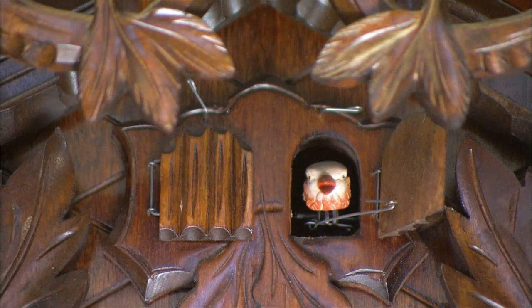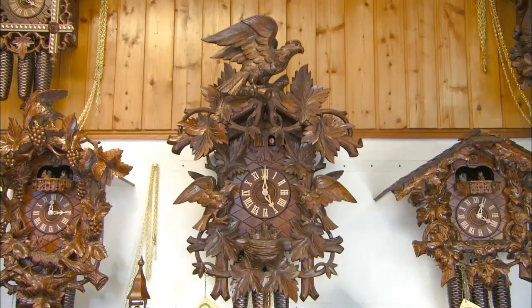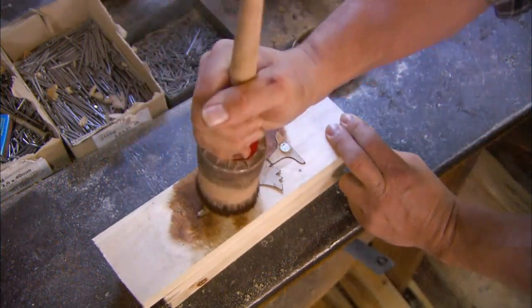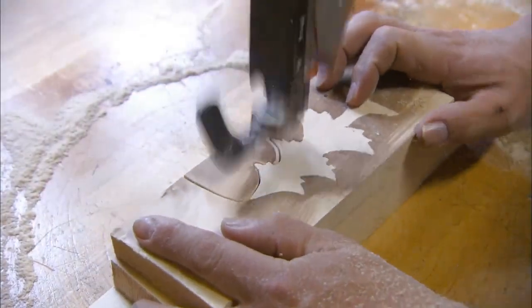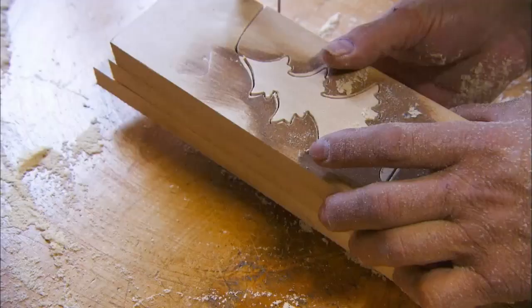The intricate carvings that decorate many cuckoo clocks start out as a block of linden, a soft wood that's easy to carve. An artisan first outlines the basic shape using a stencil and paint, then cuts it out with a jigsaw. Here he's cutting three blocks at once.